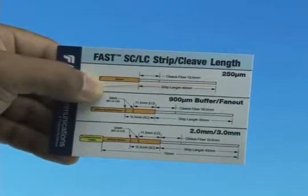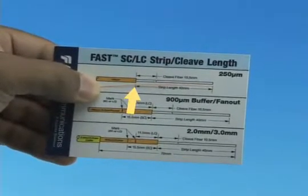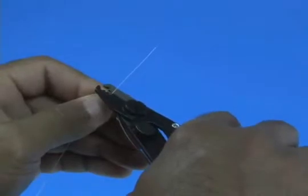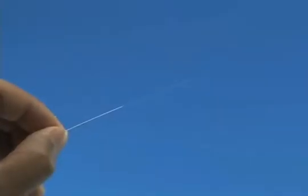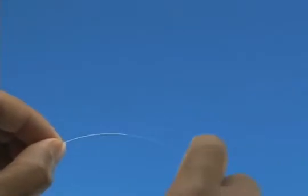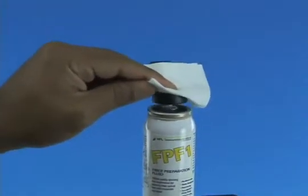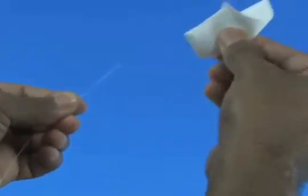Refer to the strip template and mark the 250 micron fiber at 40 millimeters from the end of the fiber. Strip 40 millimeters of coating from the fiber. Check the fiber integrity by bending the stripped end slightly at 60 degrees. Clean the bare fiber using a lint-free wipe moistened with fiber preparation fluid or 95% purity or better isopropyl alcohol.